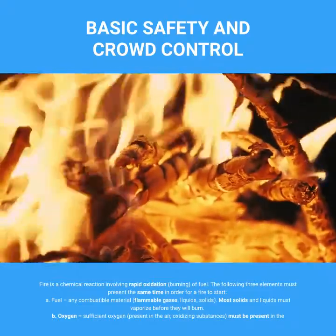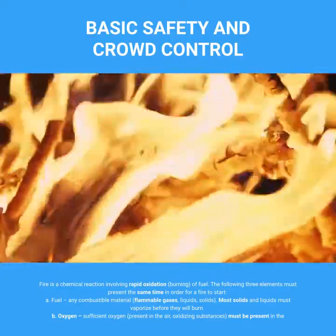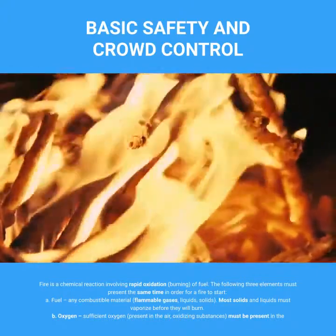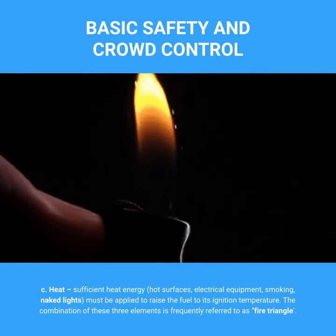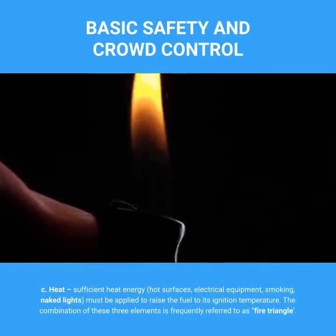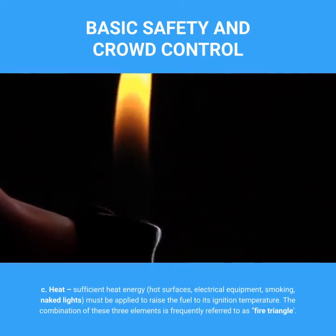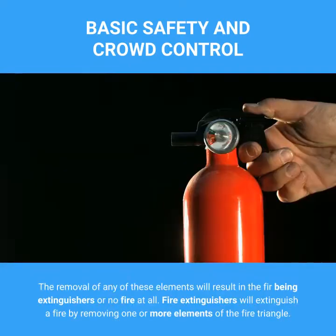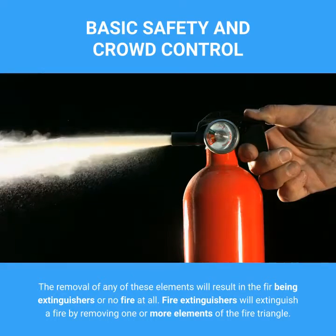Oxygen: Sufficient oxygen present in the air — oxidizing substances must be present in the atmosphere surrounding the fuel for fire to burn. Heat: Sufficient heat energy from hot surfaces, electrical equipment, smoking, or naked lights must be applied to raise the fuel to its ignition temperature. The combination of these three elements is frequently referred to as the fire triangle. The removal of any of these elements will result in the fire being extinguished or no fire at all.